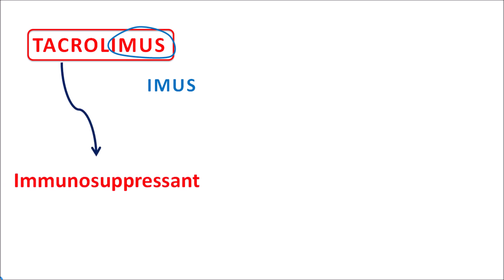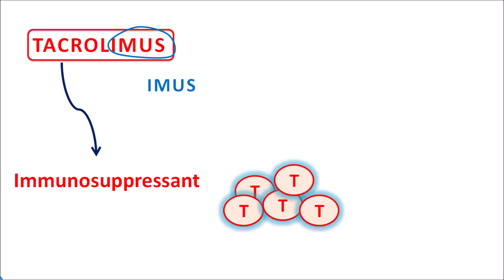Hi everyone, today in this video let us discuss tacrolimus. We can identify the suffix '-imus', so drugs ending with this suffix are commonly known as immunosuppressants. Tacrolimus is an immunosuppressant that targets T-cell activity, so T-cell proliferation is going to be inhibited by this drug, which results in immunosuppression.